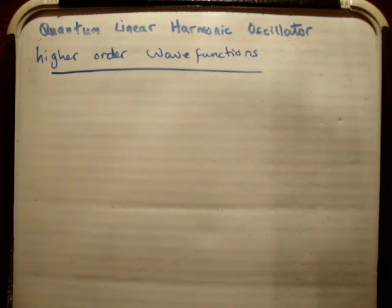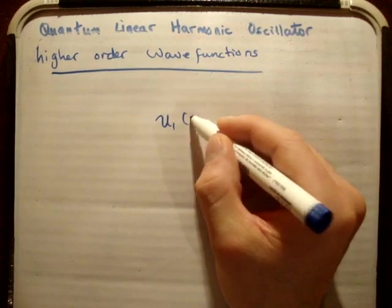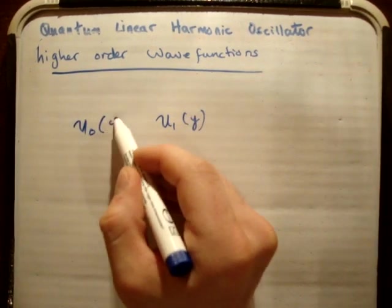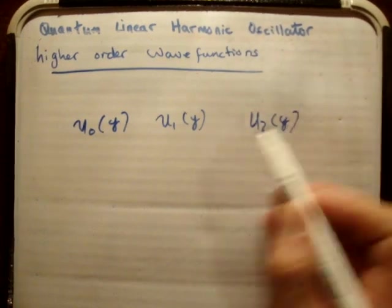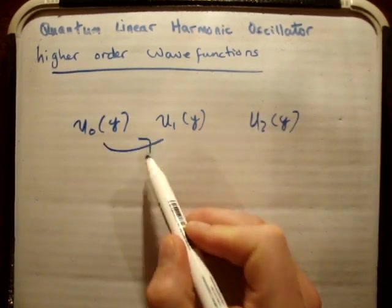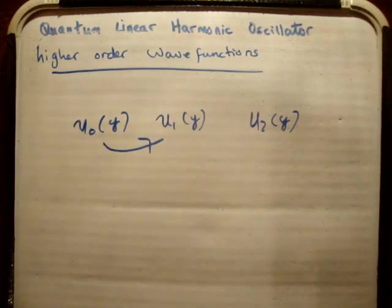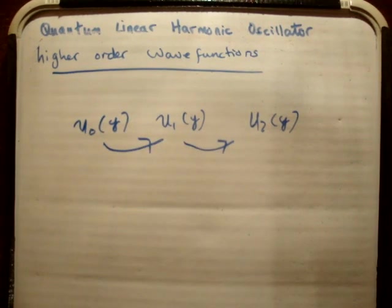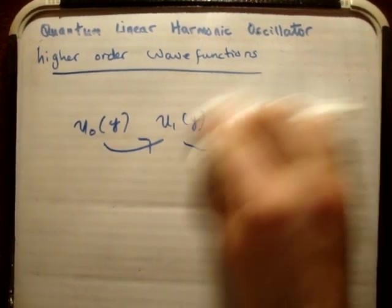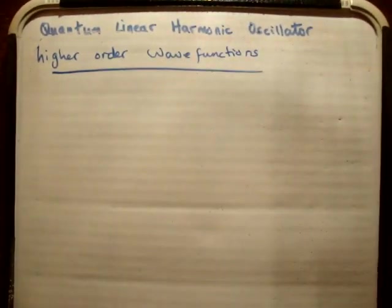Now this video leads directly on from my video regarding getting u1. So we had u1 of y, that was my previous video, and before that we had u0 of y. So now I'm just going to get u2 of y, which is the next highest wave function, and it's going to be the same procedure as going from u0 to u1. I'm going to assume that you've watched that video and I'm just literally going to do this in case you're doing it yourself and you want to make sure your algebra is correct, so I'm going to fly through it.